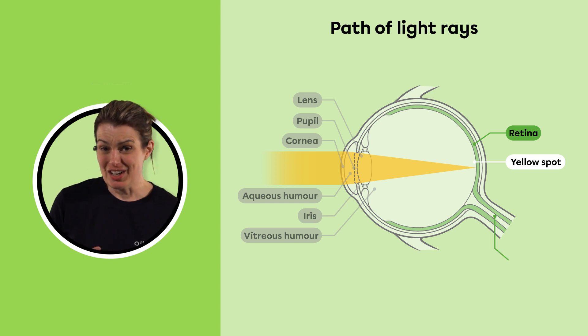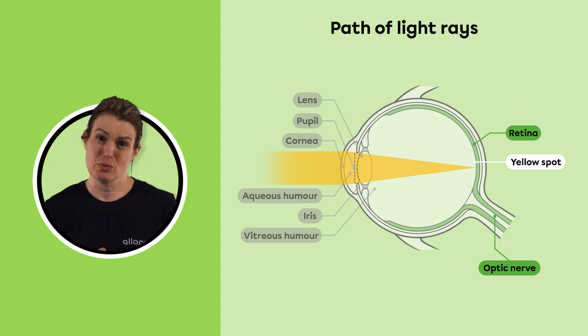At the point where the retina is attached to the optic nerve, there are no photoreceptors, which means that no image will be produced if rays converge there. This is why this area is called the blind spot.